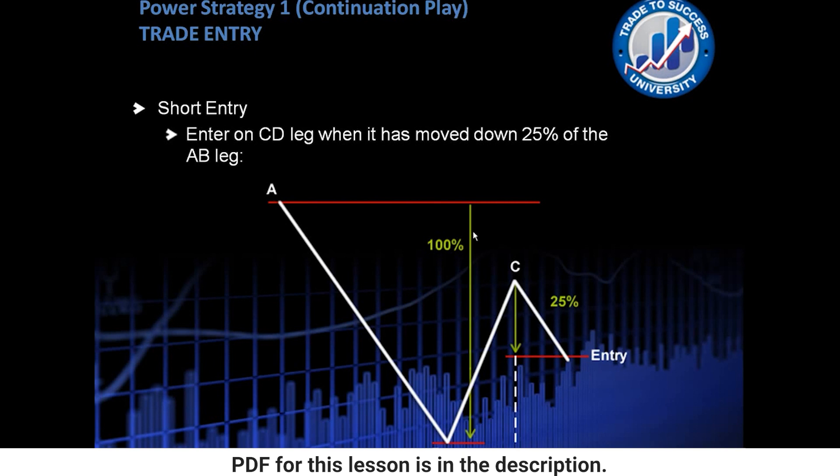So if the move from A to B is 100 pips, we would want to enter when price moves down 25 pips lower than point C. 25 pips is 25% of the A to B move, which we're saying is 100 pips in this example.